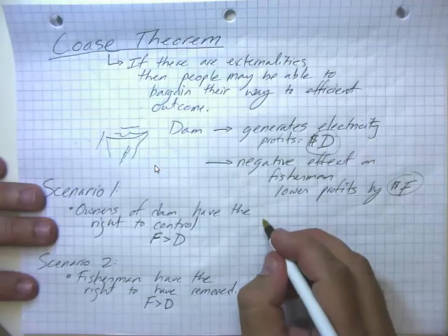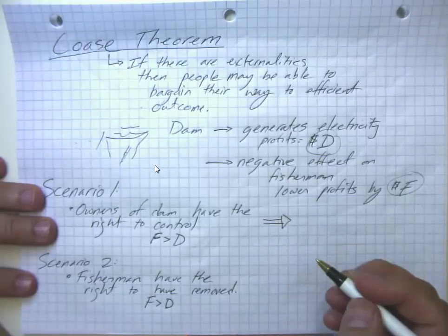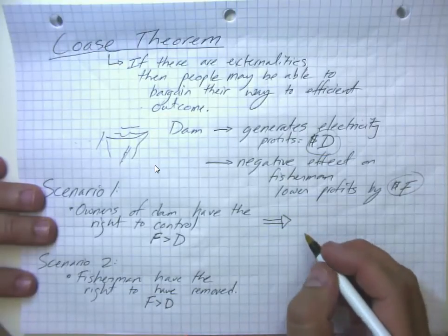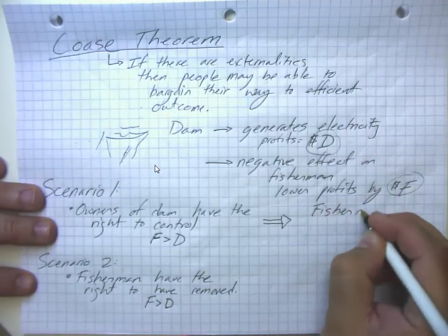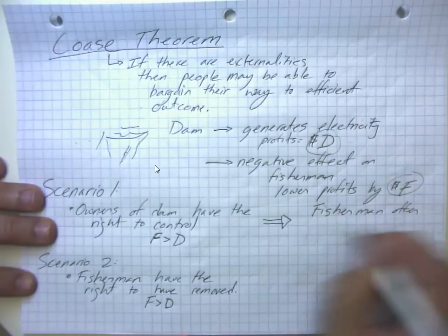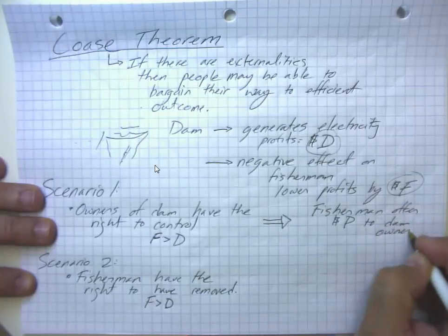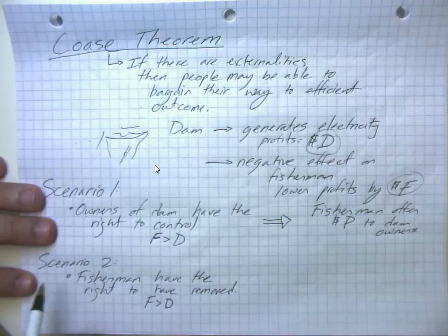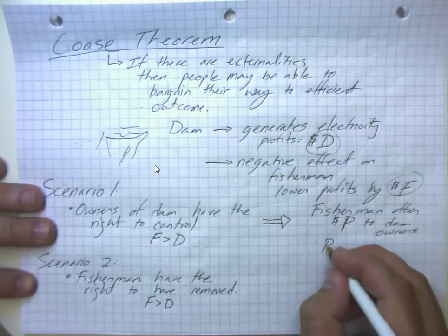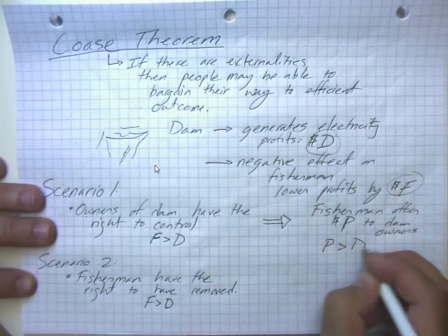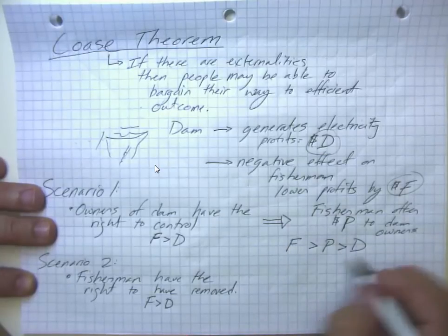So the way we think this might play out is that in scenario one, the fishermen can offer the dam owners some money to tear down their dam. So the fishermen offer P dollars to dam owners. Because since the dam owners have the right, the fishermen have to actually compensate them or persuade them to tear down the dam. And a price that is between the value of the fish and the value of the dam will be mutually beneficial.